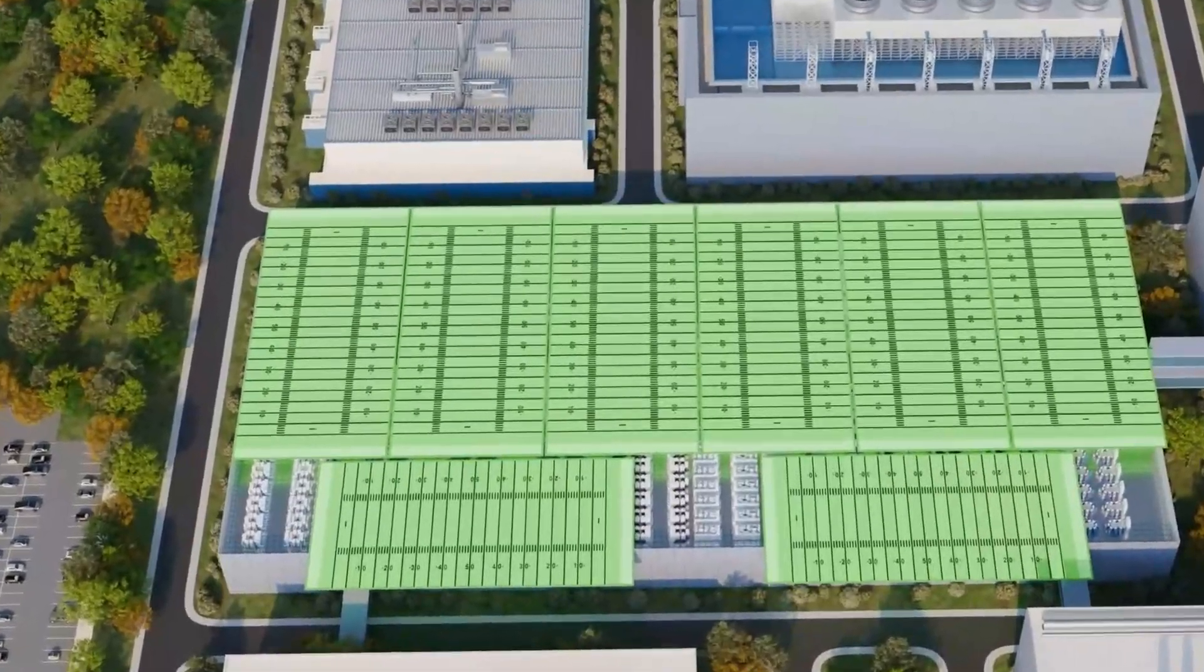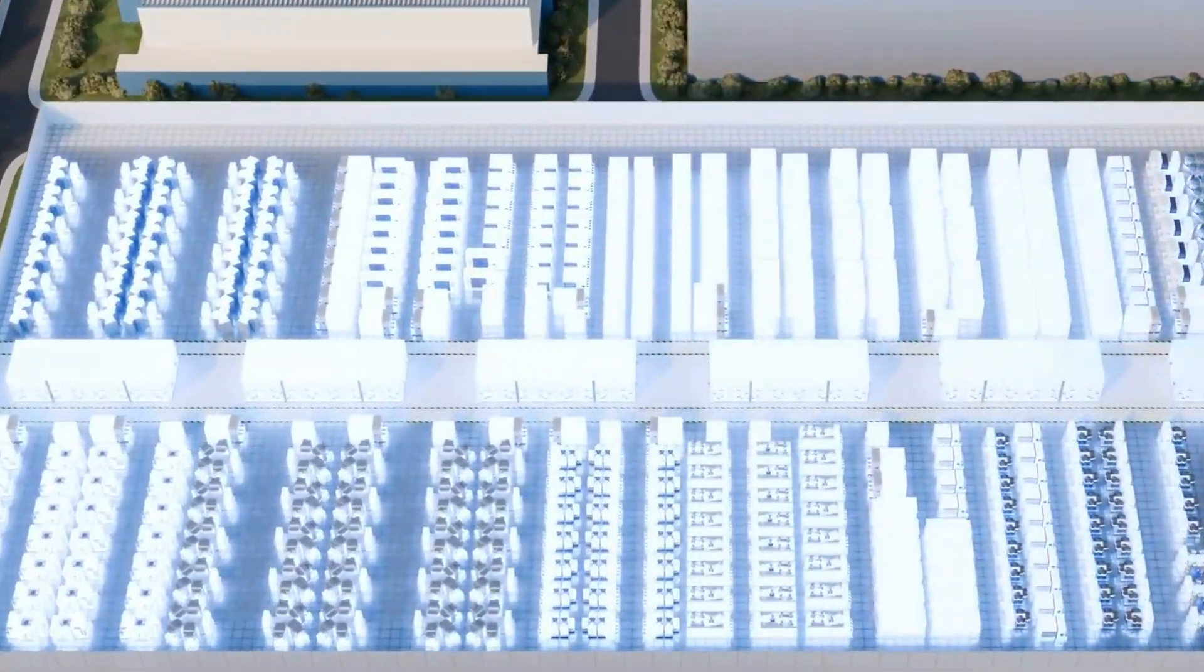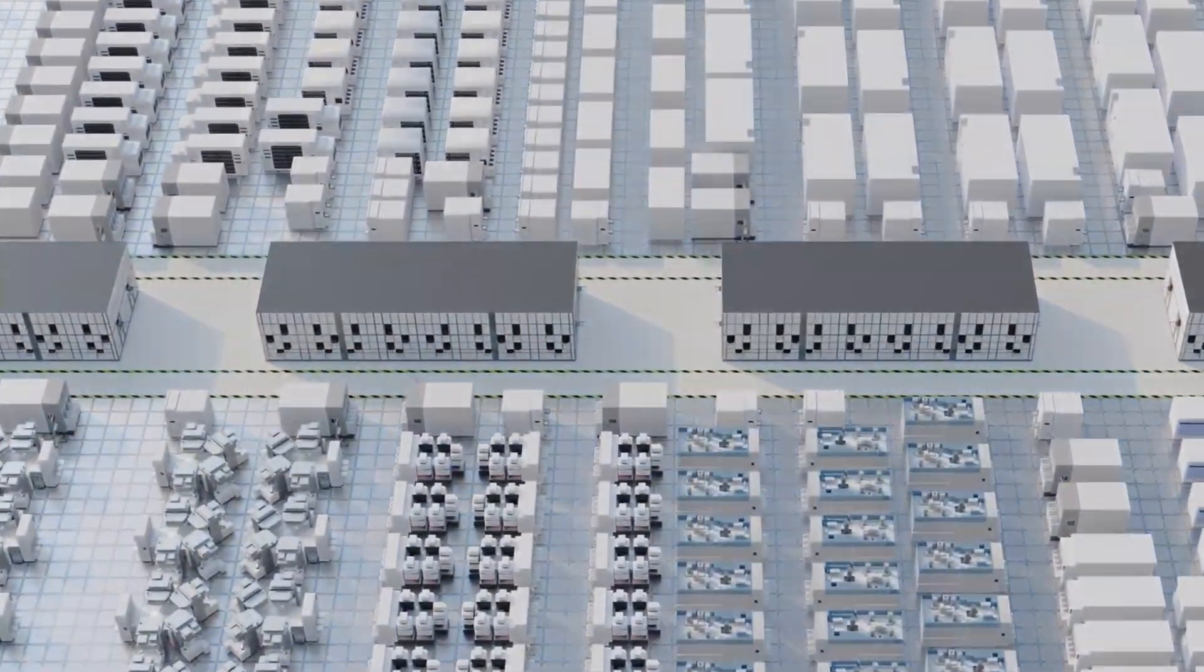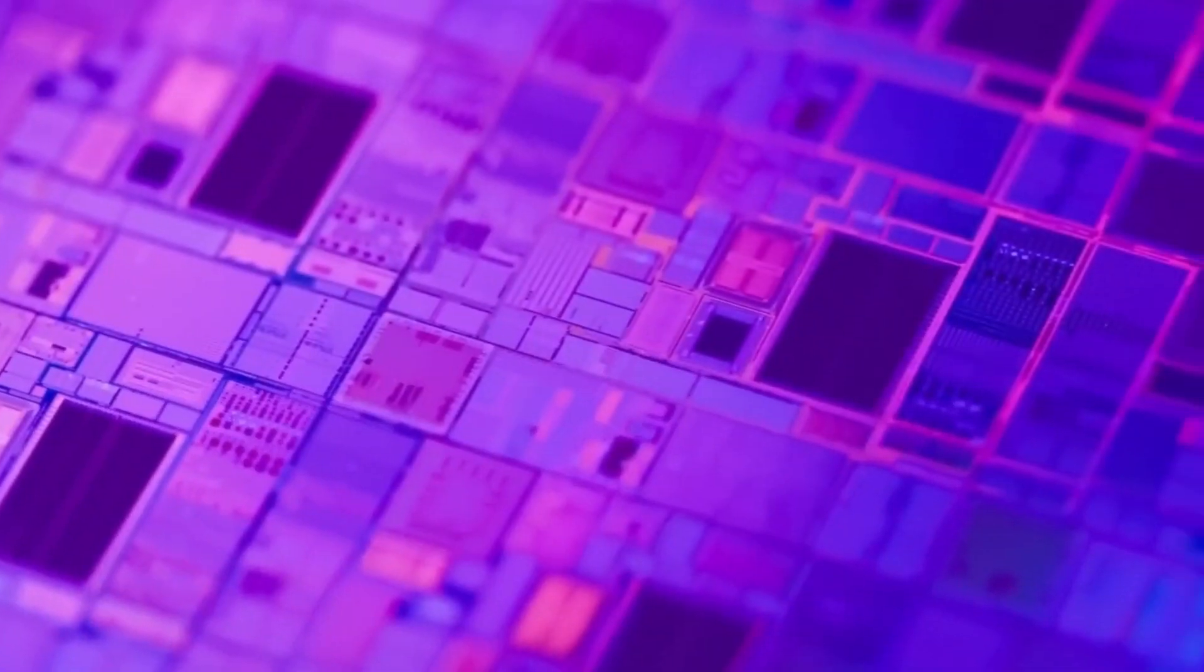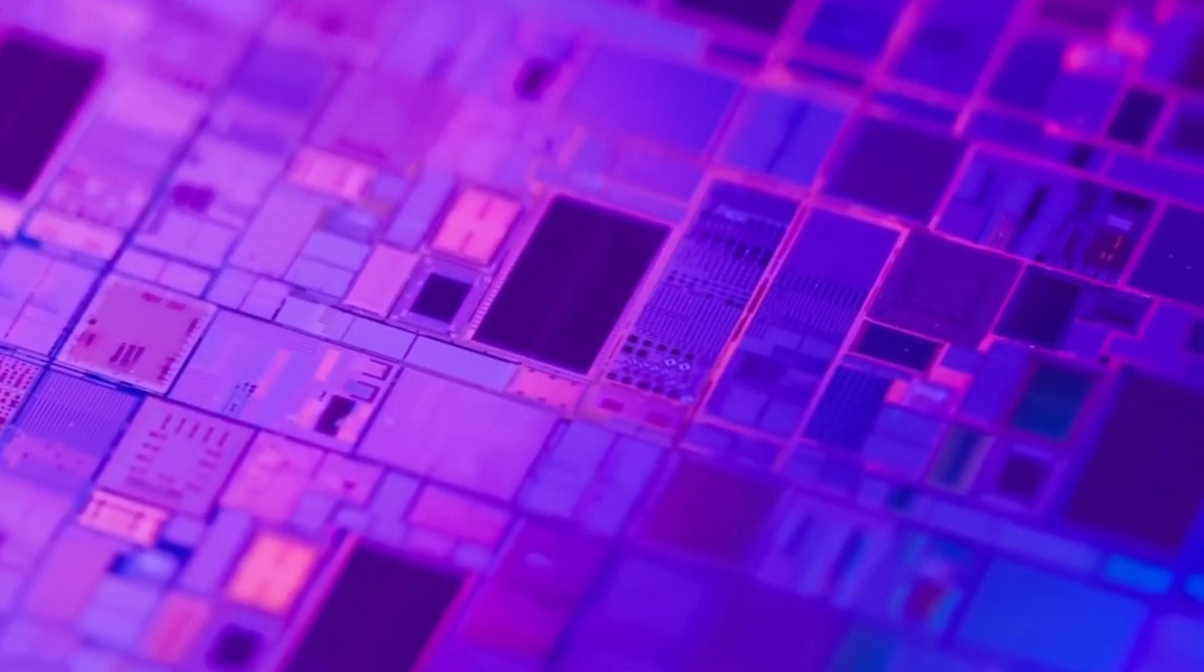This means that depending on how it is treated, silicon can either conduct or block electric currents. It is this property that makes it perfect as a support for the millions of tiny transistors needed to make a modern microprocessor. The problem is that since these transistors are so small, the silicon base on which they rest has to be completely perfect.